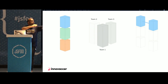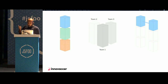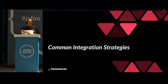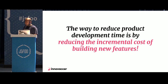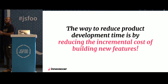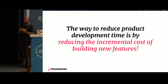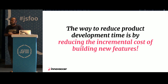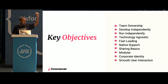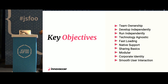Let's talk about common integration strategies and what we did at Innovasys. The cost of shipping any new feature had become so expensive that we were innovating at a very slow pace. We did not want to break anything by pushing radical new features to production. So we wanted to reduce feature rollout time. The key metrics we based our approach on were: team ownership, develop independently, run independently — which were critical — plus being technology agnostic, fast load time, native support, sharing basics between frontend applications, modular application, corporate identity across product verticals, and smooth user interaction.